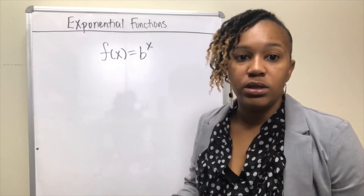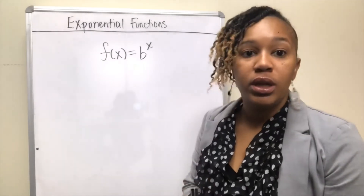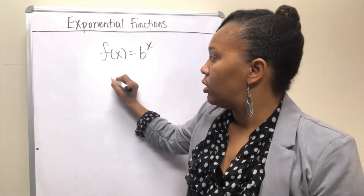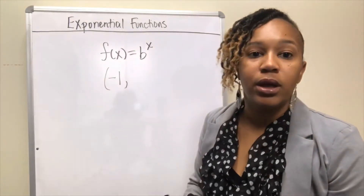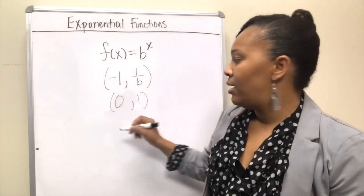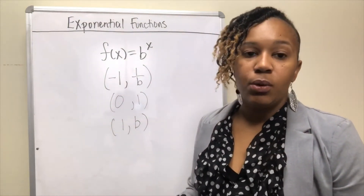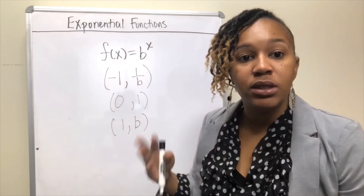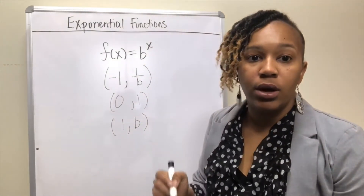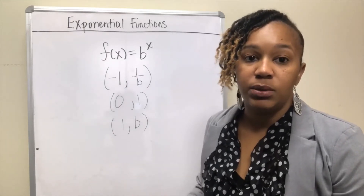We graphed two exponential functions using t-charts, but there are three points that are always on the graph and easy to remember. When you plug in negative one, b^(−1) always gives the reciprocal of b. When you plug in zero, you always get 1. When you plug in one, you always get b. So the three points are (−1, 1/b), (0, 1), and (1, b). If it's just b^x with no transformations, these three points will always be on the graph and let you plot it quickly.